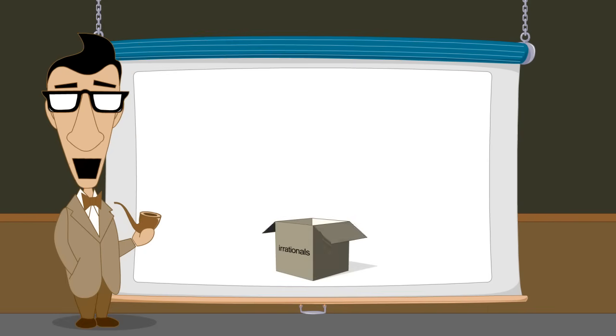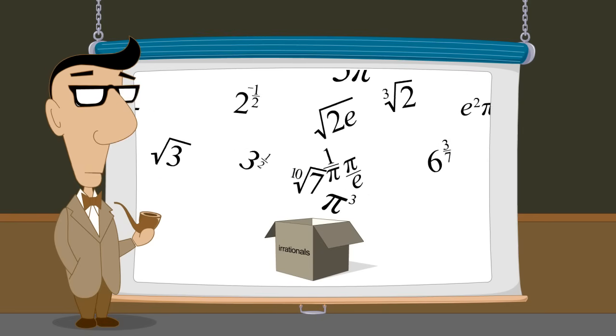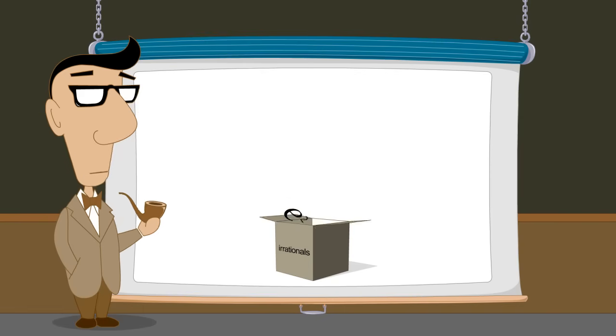With the invention of calculus, mathematicians were able to prove that numbers like pi and e are also irrational. In fact, there are an infinite number of irrational numbers.